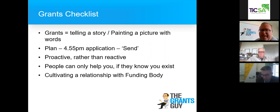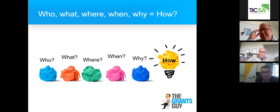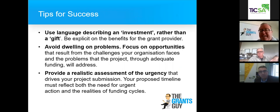Profile, profile, profile — people can only help people they know exist. Cultivate that relationship with the funding body well in advance of a grant funding round. Your first template: who are you, what do you do, where do you do it, when do you do it, why do you do it — which is more integral than ever before — and how much do you want? Why are you in the tourism industry? You employ local people, you create jobs, you create something for the local economy that people back and sustain. Talk about an investment rather than a gift. Avoid dwelling on problems and focus on opportunities.